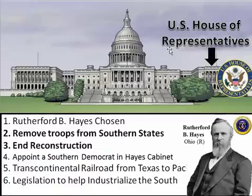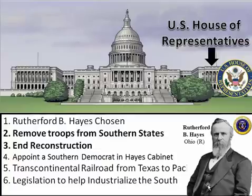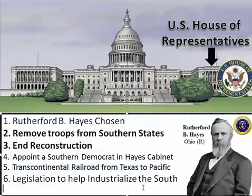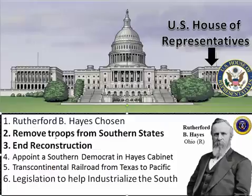At either rate, a compromise did occur. Number one: Rutherford B. Hayes was chosen as president. The Democrats said they didn't mind accepting Hayes the Republican as president, as long as certain other things were met. Number two: the agreement was that if Hayes were elected, he would remove all troops from the southern states and end Reconstruction. Those two things are really what's going to end Reconstruction.